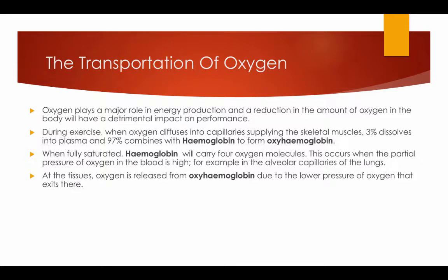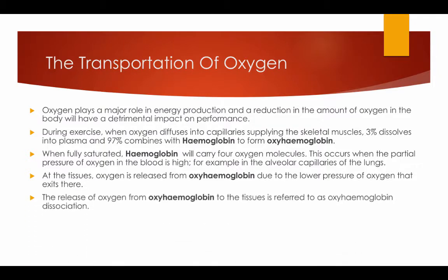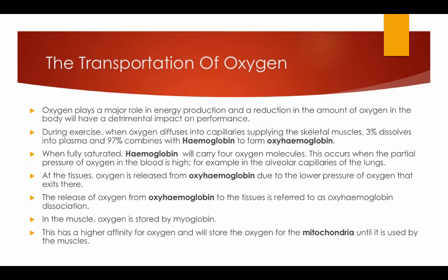At the tissues, oxygen is released from the oxyhaemoglobin due to the low pressure of oxygen that exists there. The release of oxygen from oxyhaemoglobin to the tissues is referred to as oxyhaemoglobin dissociation. In the muscle, oxygen is stored by myoglobin, which has a higher affinity for oxygen and will store the oxygen in the mitochondria until it is used by the muscles.